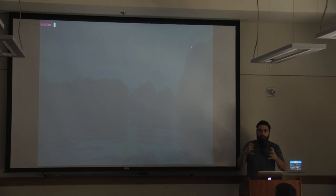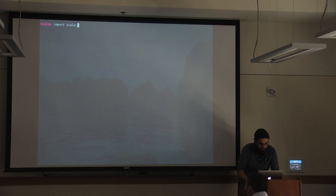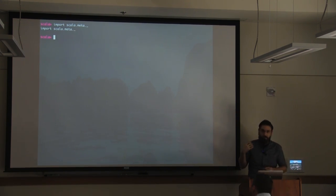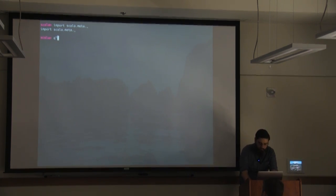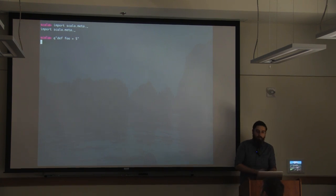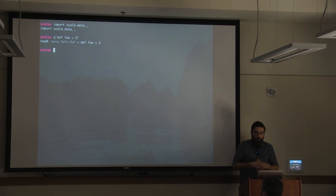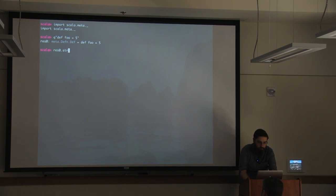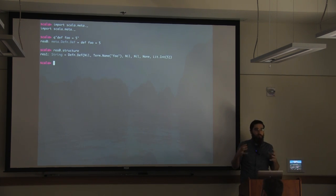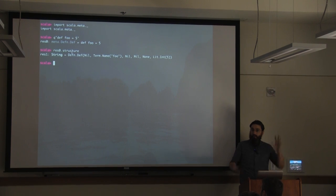The reason I asked you to have the Scala Meta library available at your console is because I really want people to understand and feel the process of translating these ASTs. So without further ado, let's get started. `import scala.meta._` will bring in everything from Scala Meta. Scala Meta has a lot of structures and some string extensions, so we can do things like `q"def foo = 5"` and that will give us a definition in Scala Meta.